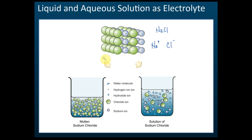But if we heat sodium chloride to a certain temperature, it starts melting and becomes molten sodium chloride. In molten sodium chloride, the ions can start to move freely. If the ions move freely, they become charge carriers. When a potential difference is applied across the liquid, the positive ions move to the negative terminal and the negative ions move to the positive terminal, and therefore they can conduct electricity.